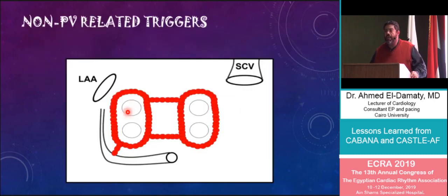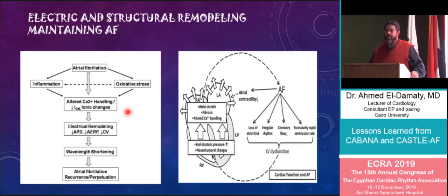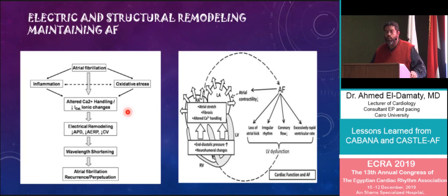Beside the pulmonary veins, there are non-pulmonary vein triggers that include the left atrial appendage, the coronary sinus, and the superior vena cava in some patients. Mechanisms that perpetuate atrial fibrillation include electrical remodeling involving inflammation and oxidative stress that leads to altered calcium handling. On the other hand, structural remodeling involves atrial stretch and atrial fibrosis, together with left ventricular dysfunction — all factors that lead to the concept of atrial fibrillation begetting atrial fibrillation.